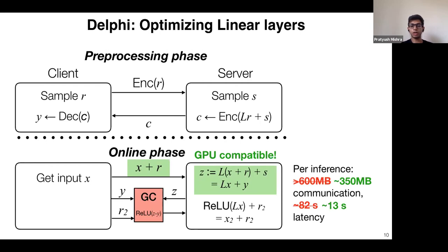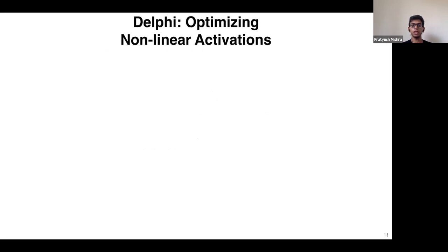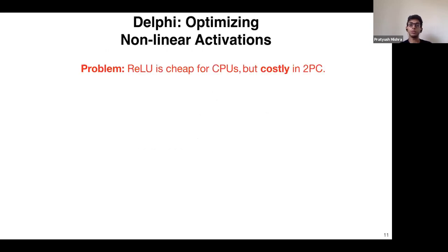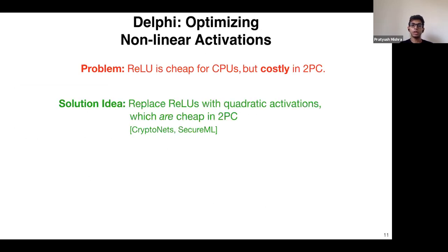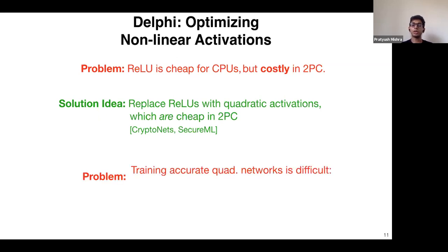We're still not quite done because we still have the bottleneck of the garbled circuit, which is communication-heavy and requires computation overhead. The problem is that ReLU is cheap in the CPU cost model but expensive in the 2PC cost model. An idea to solve this is to replace ReLU with something cheap in the 2PC cost model — for example, multiplication. So you could replace ReLU with quadratic activations. This isn't a new idea, but training networks with quadratic activations is quite difficult because all our training algorithms are optimized for all-ReLU networks.